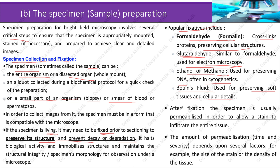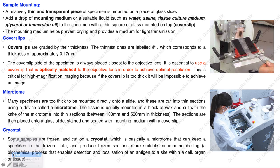After fixation, the specimen is usually permeabilized to allow a stain to infiltrate the entire tissue. The amount of permeabilization time and severity depends on factors such as the size of the stain or the density of the tissue sample. A relatively thin and transparent piece of specimen is mounted on a glass slide with a drop of mounting medium such as water, saline, tissue culture medium, glycerol, or immersion oil, and covered with a thin square of glass called a cover slip. The mounting medium helps prevent drying and provides a medium for light transmission.